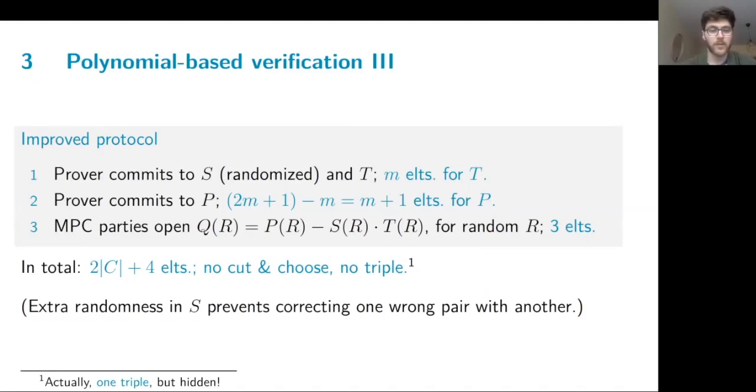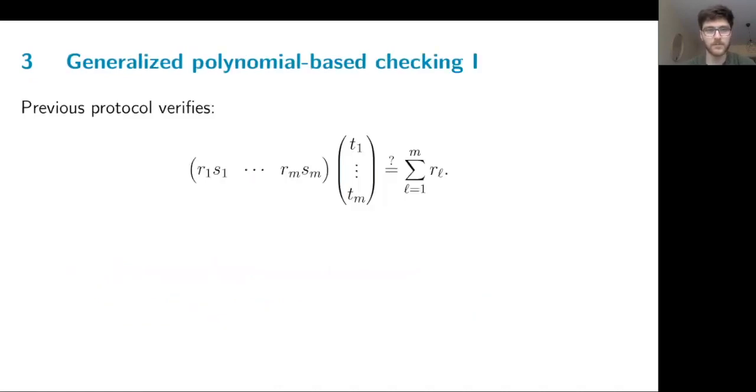It's hidden in the point evaluated as zero required for randomization. Here, I'll just note that the extra randomness in the polynomial S is added to prevent pairs interacting with each other and correcting off each other. But it doesn't add anything to communication.